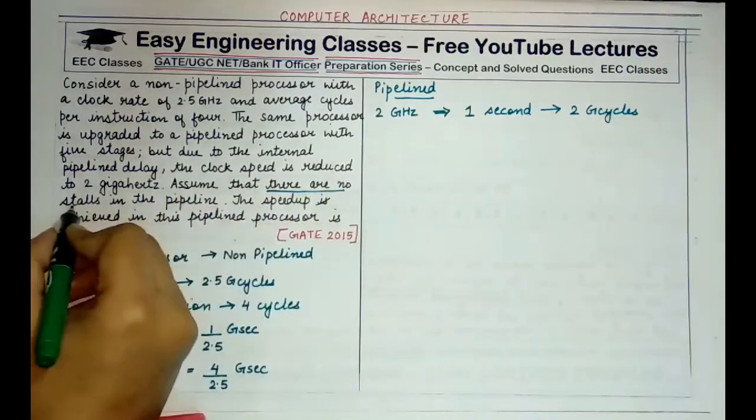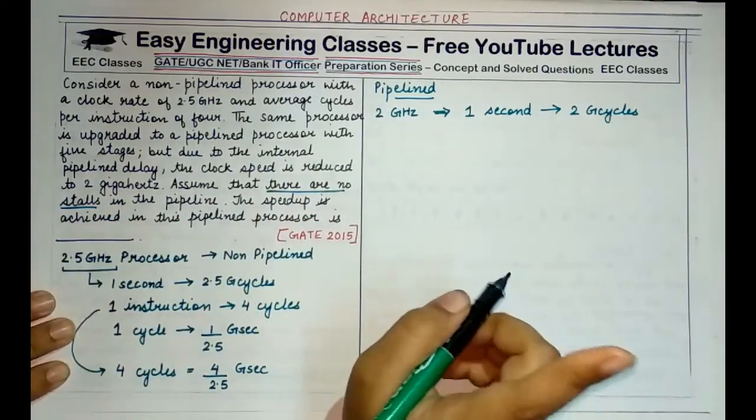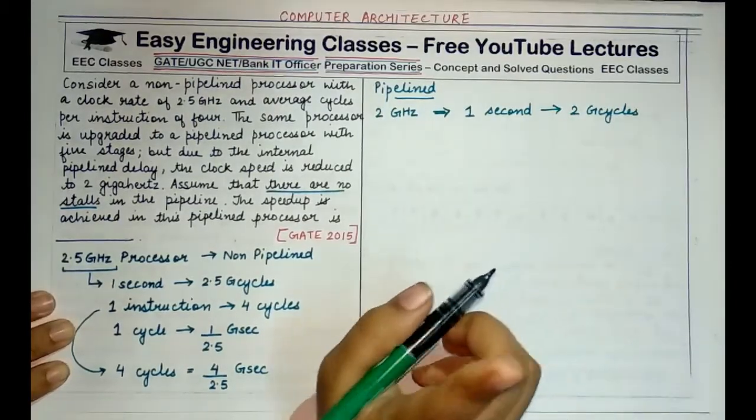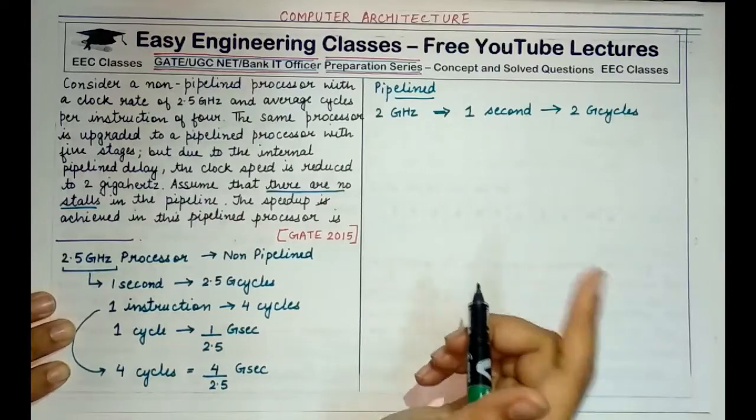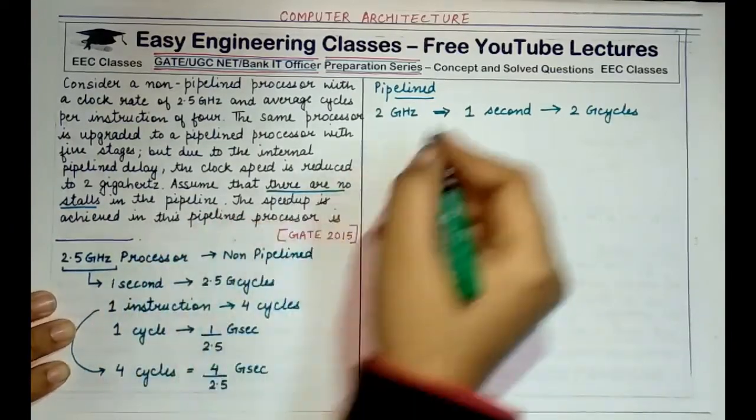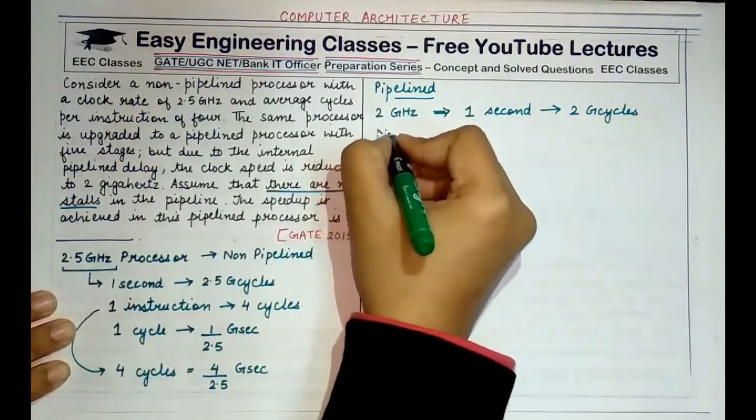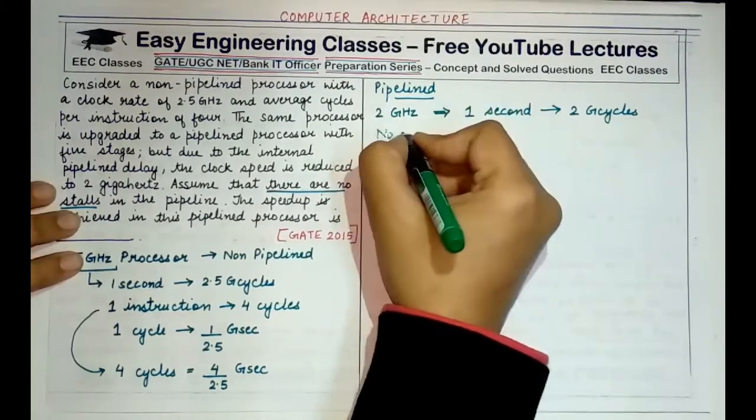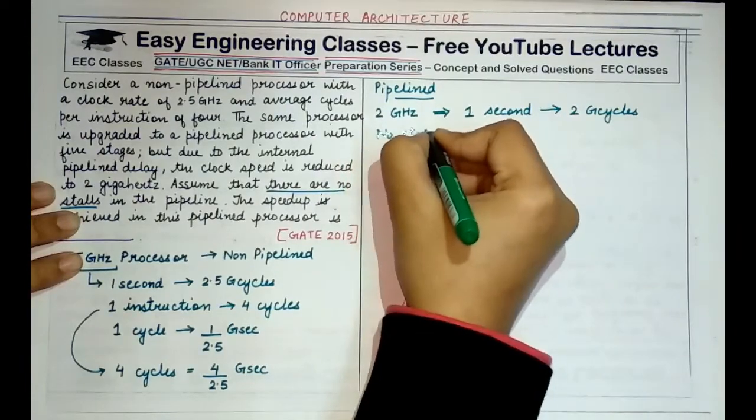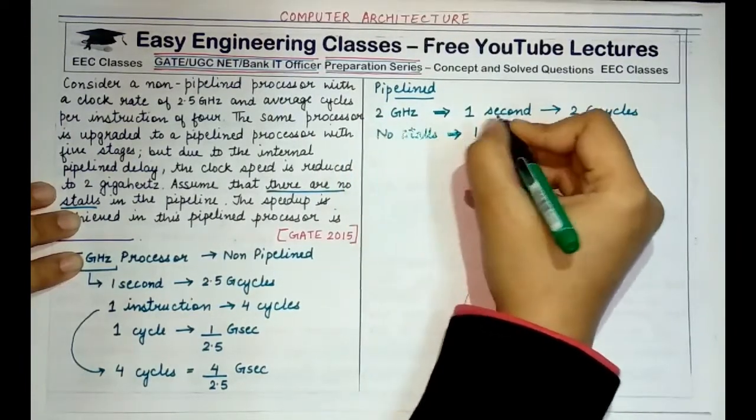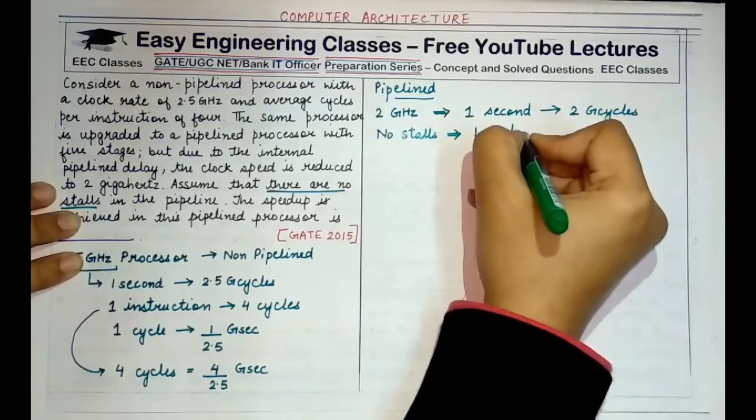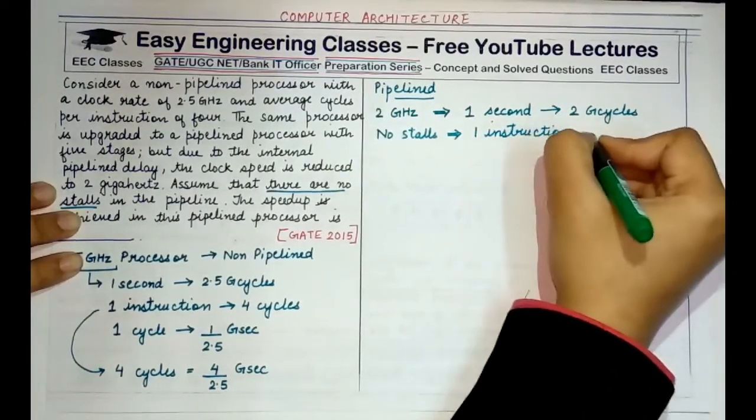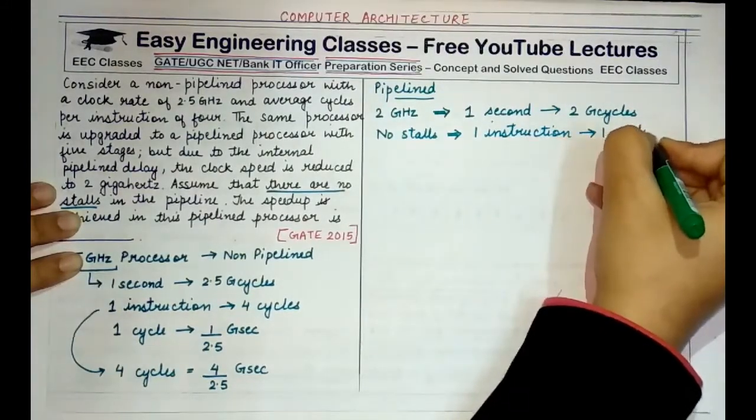What does this line mean? This line means that a single instruction only takes one cycle. This is very important. When you are told that there are no stalls in the pipeline, it means that a single instruction which was previously taking 4 cycles will now take one single cycle. So this means one instruction takes one cycle to complete.